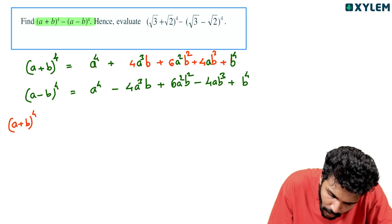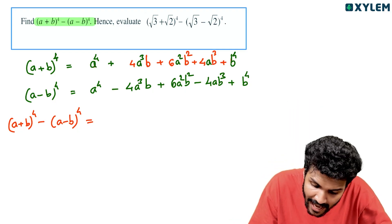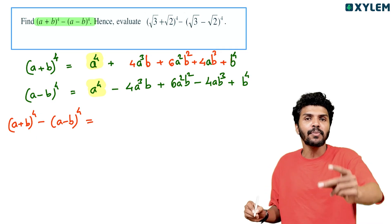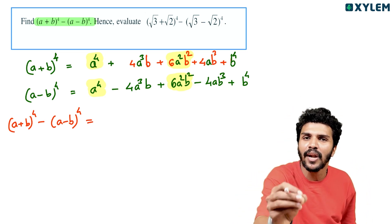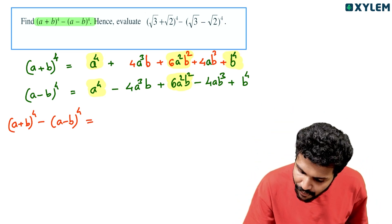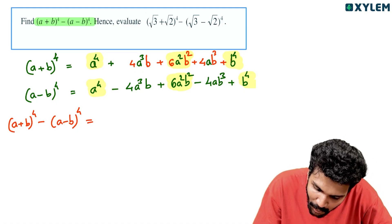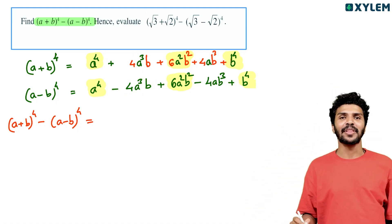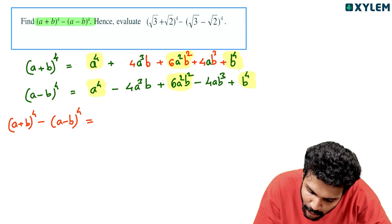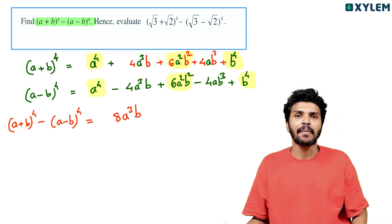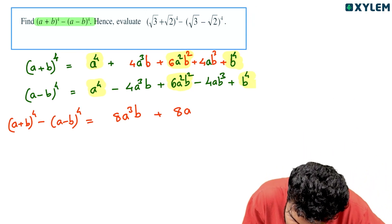(a plus b) whole raised to 4, minus (a minus b) whole raised to 4. The terms with opposite signs cancel, and the terms with the same sign add together: 4a cubed b plus 4a cubed b gives 8a cubed b, and 4ab cubed plus 4ab cubed gives 8ab cubed.